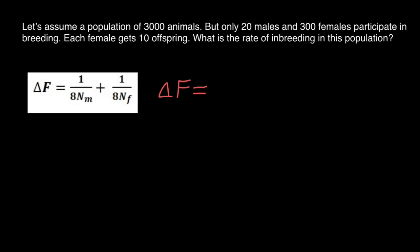So let's return to our problem and our formula. ΔF is going to stand for the inbreeding coefficient or inbreeding in the following generation, and we have to find the number of males, which is 20, so 1 divided by 8 times 20, plus 1 divided by the number of females participating in breeding, and this is going to be 8 times 300.